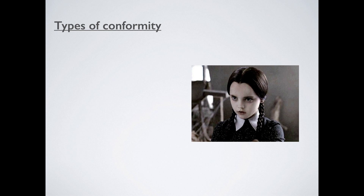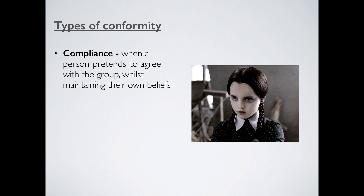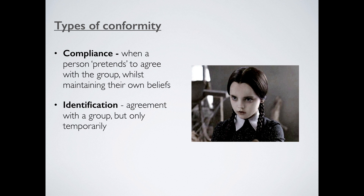Now let's think about different types of conformity. We're going to go upwards in terms of how complex and how deep the conformity goes. We're going to talk about compliance to start with — this is the shallowest form of conformity. Compliance is what happens when a person just pretends to agree with a group whilst individually they maintain their own beliefs. For example, imagine Tom sitting in the cafeteria — he's not really fussed about taking his tray back, but he notices that everyone else has, so he does the same just to fit in with the group, without really changing his opinion.